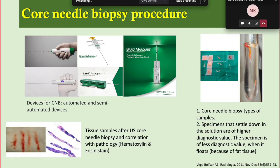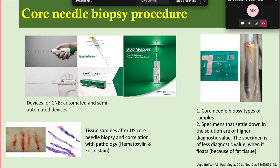The MaxCore needle is an automatic gun with a cocking device. With a single shot, both inner and outer needles advance in a flick of a second to obtain the sample. After taking the sample, we check whether the tissue core is floating or not. If it floats, it contains a lot of fat and may not be diagnostic, requiring another sample. If it does not float, it contains tissue with less fat and is more likely to be diagnostic.